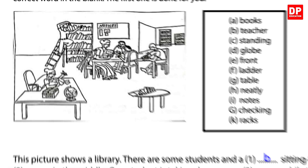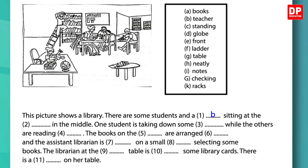Let's now fill in the blanks — remember to look closely at the picture. The picture shows a library. There are some students and a teacher sitting at the table in the middle. One student is taking down some notes while the others are reading books. The books on the racks are arranged neatly and the assistant librarian is standing on a small ladder selecting some books. The librarian at the front table is checking some library cards. There is a globe on her table. There are ten blanks to fill, so you get half a mark for each answer — be very careful and read the sentences closely.